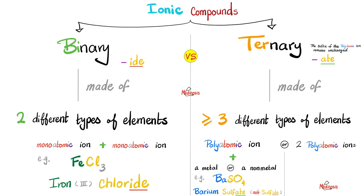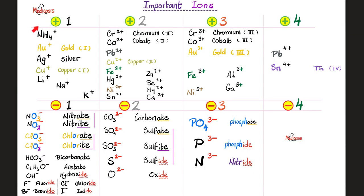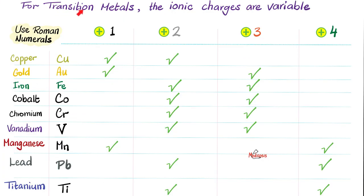When you have a ternary compound — three or more different types of elements — with a polyatomic ion, it preserves its name; sulfate stays sulfate, not sulfide. Polyatomic ions have a net positive or negative charge and contain two or more atoms covalently bonded. Transition metals are tricky: copper can be +1 or +2, iron +2 or +3, gold +1 or +3, cobalt +2 or +3.